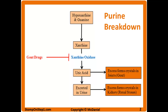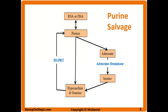Gout drugs like allopurinol act on this system by inhibiting xanthine oxidase, which reduces the amount of xanthine that's converted to uric acid. When you've got less uric acid around, then you've got less gout. That's how allopurinol works.